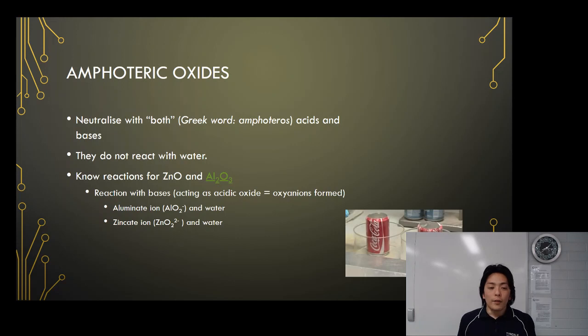They are amphoteric, therefore they can react with acid as well. In reactions with acid, zinc oxide and aluminium oxide would act as base this time, and they would make ions of metals and water.